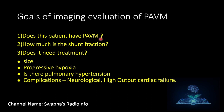Goals of imaging evaluation of pulmonary AVM include: confirming the diagnosis, quantifying the shunt fraction, determining need for treatment based on arterial feeder size and progressive hypoxia, assessing for pulmonary hypertension, and evaluating for complications such as neurological stroke and high-output cardiac failure.